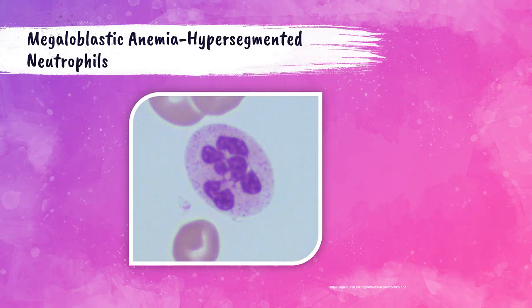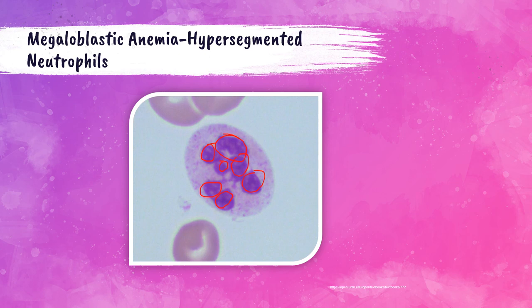Megaloblastic anemia causes ineffective erythropoiesis — ineffective red blood cell production. Neutrophils have an interesting characteristic in these patients: hypersegmented neutrophils, which are characterized by having more than five lobes in their nucleus. These hypersegmented neutrophils are found in the peripheral blood of someone with megaloblastic anemia, in addition to those macrocytic red blood cells.